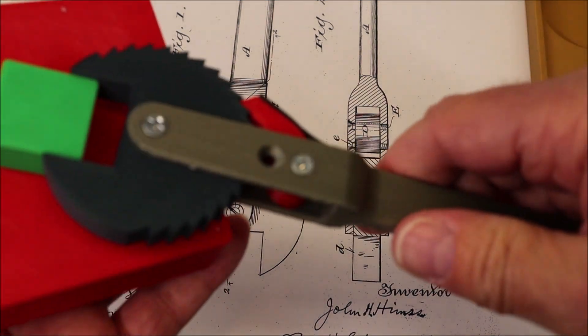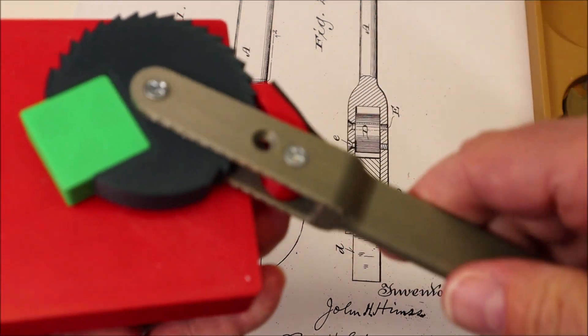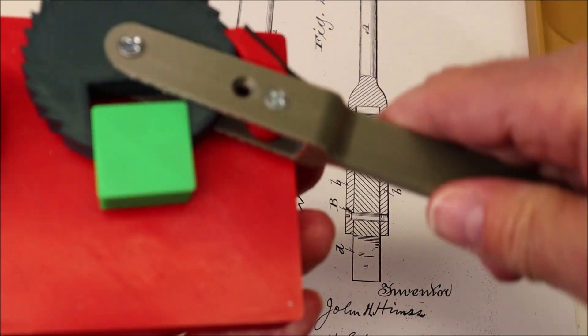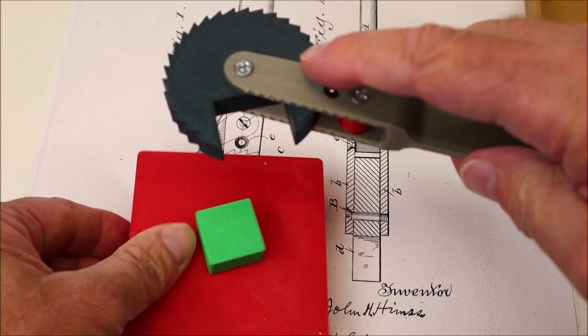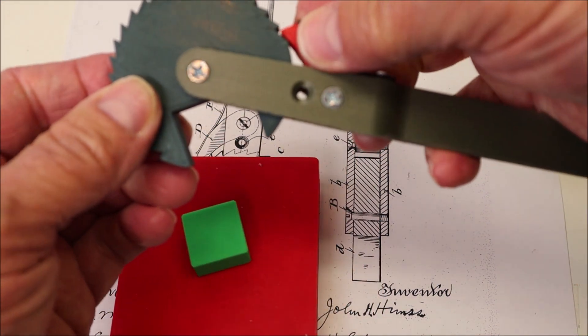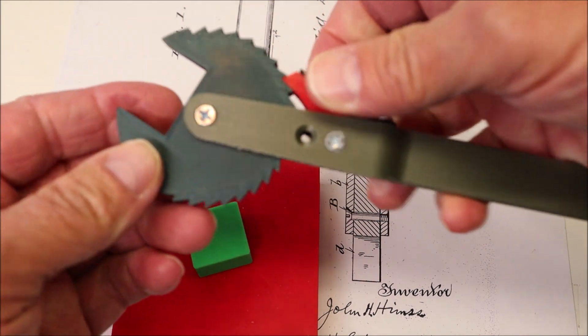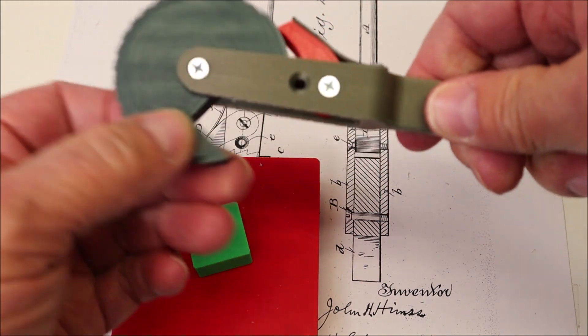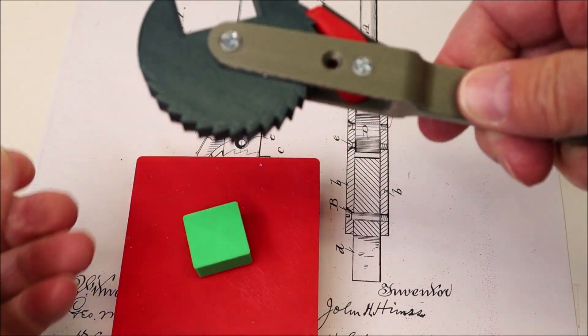And you can hear the wrench ratcheting as I'm loosening this bolt. And when you get to this point you can either lift the pawl up and go back to the beginning or just simply spin the disc around until it engages again.